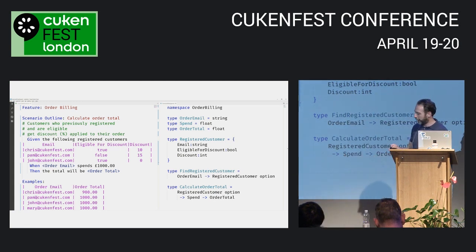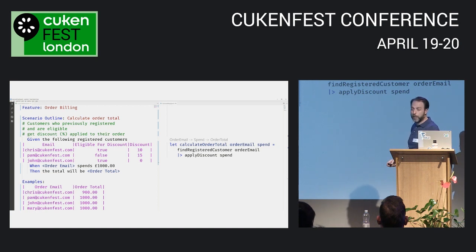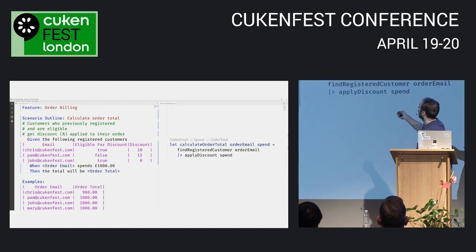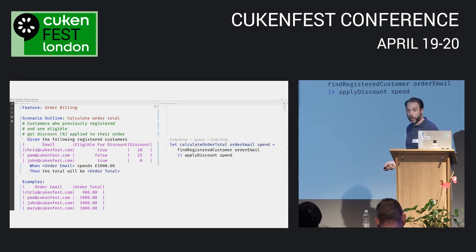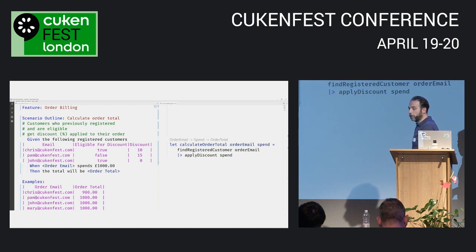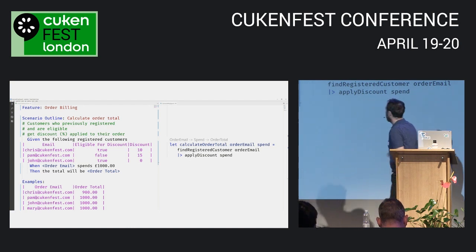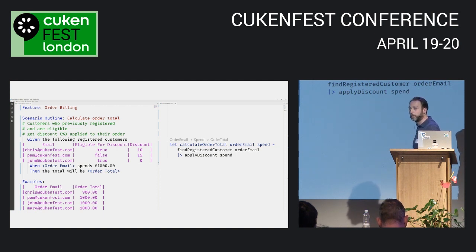I said no baffling F# code — I didn't say no F# code. Here's what it looks like in the real world. You can see a plugin to VS Code, and my compiler has figured out the signature: takes an order email and a spend, returns an order total — exactly what the scenario describes. The function is named the same as the scenario outline and sits in the order billing namespace. We find our registered customer, then use the pipe operator — which takes the output of 'find registered customer' and passes it into 'apply discounts'. That's now the pure function.